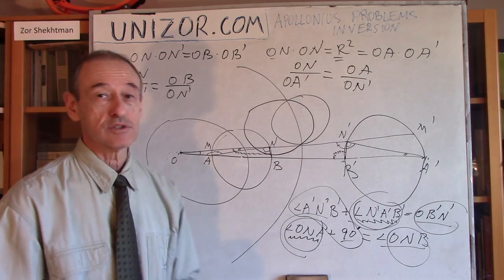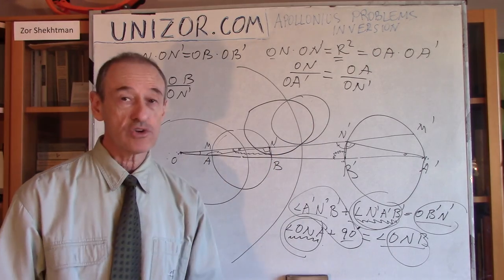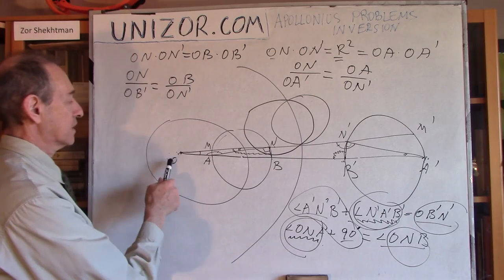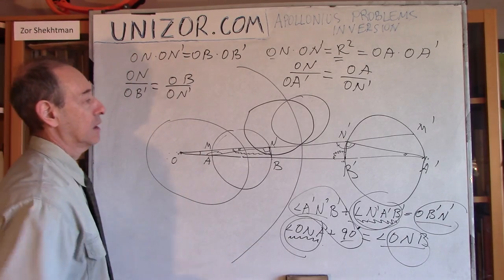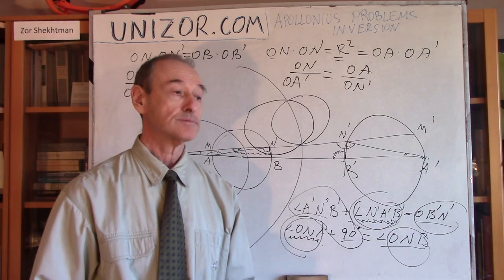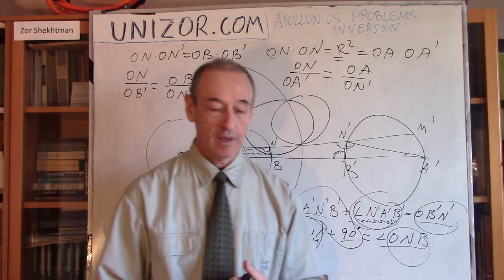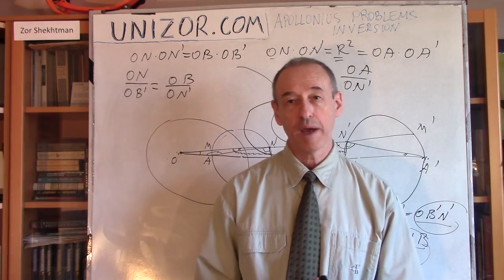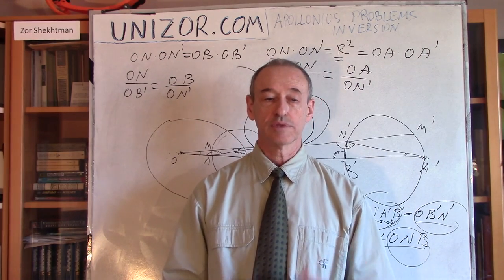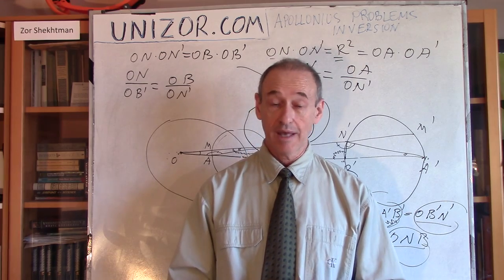Any circle, even one that intersects the inversion circle, is still transformed into a circle. If it passes through the center of inversion, the image is a line. That's it for today — thank you very much, try to follow my recommendations about going to the website and doing something yourself. That would be very helpful. Thanks very much and good luck.